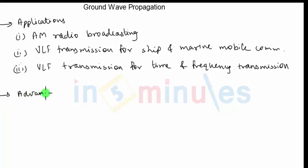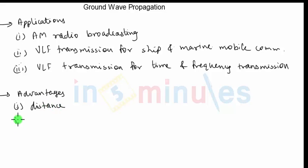Let us discuss a few advantages and disadvantages of ground wave propagation. The first advantage is that if the transmitted power is large enough, ground wave propagation can be used to communicate between any two points in the world — distance is the important advantage. The second advantage is that atmospheric conditions do not affect ground wave propagation too much, simply because the transmission is along the surface of the earth.